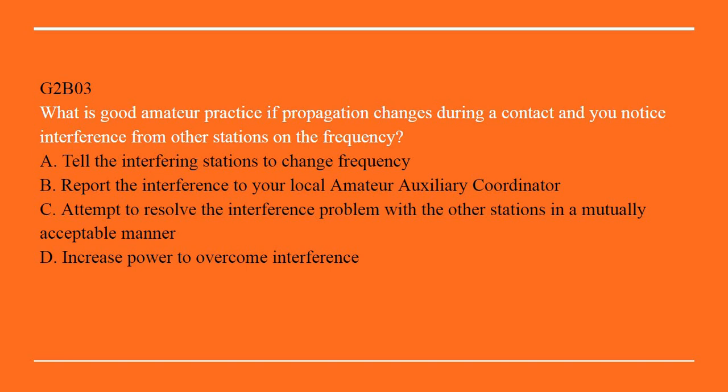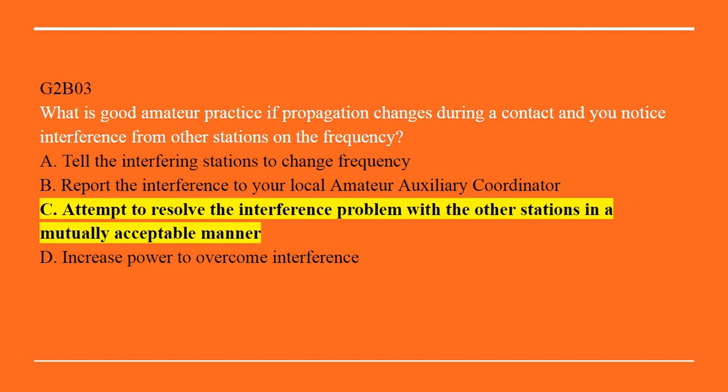G2B03: What is good amateur practice if propagation changes during a contact and you notice interference from other stations on the frequency? A. Tell the interfering stations to change frequency. B. Report the interference to your local amateur auxiliary coordinator. C. Attempt to resolve the interference problem with the other stations in a mutually acceptable manner. Or D. Increase power to overcome interference. The ideal solution is C: Attempt to resolve the interference problem with the other stations in a mutually acceptable manner.